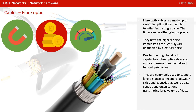Fibre optic cables are made up of very thin optical fibres bundled together into a single cable. The fibres can be either glass or plastic. They have the highest noise immunity, as the light rays are unaffected by electrical noise. Due to the high bandwidth capabilities, fibre optic cables are more expensive than coaxial and twisted pair. They're commonly used to support long distance connections between cities and countries, as well as data centres and organisations that are transmitting large volumes of data.